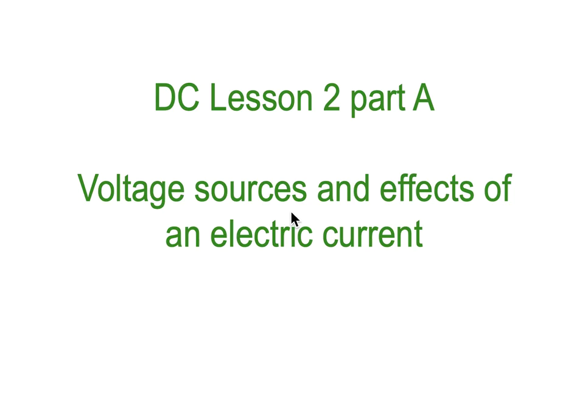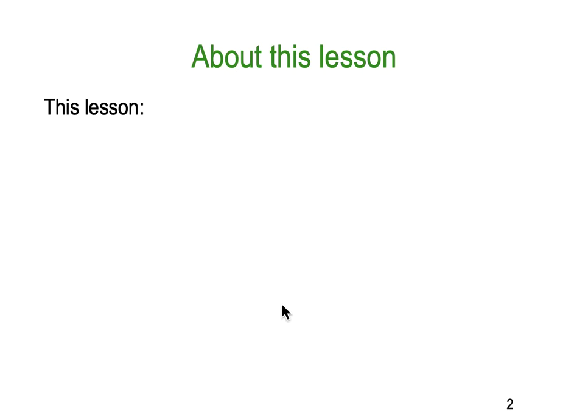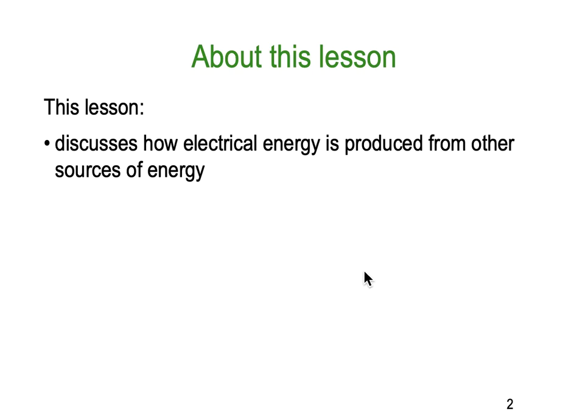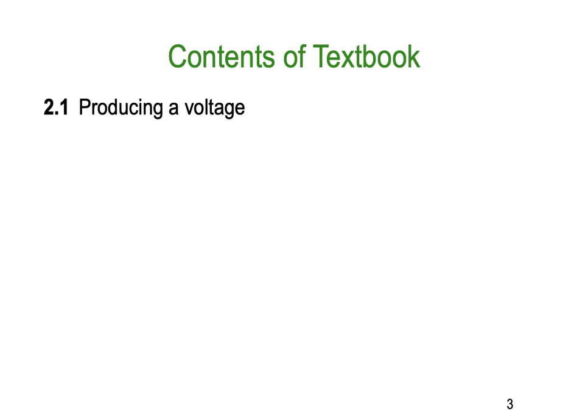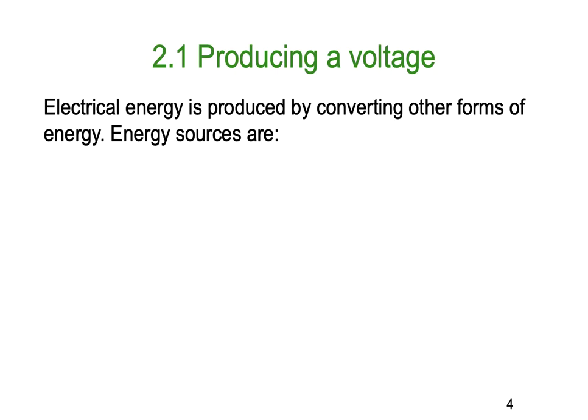Hello, Dr. Ken here with you. DC lesson number two, part A. So we're looking at voltage sources and effects of an electrical current. This lesson is going to be all about how electrical energy is produced from other sources of energy. We're using the textbook by Phillips, Electrical Principles, and this is section 2.1, from which we build the lesson.